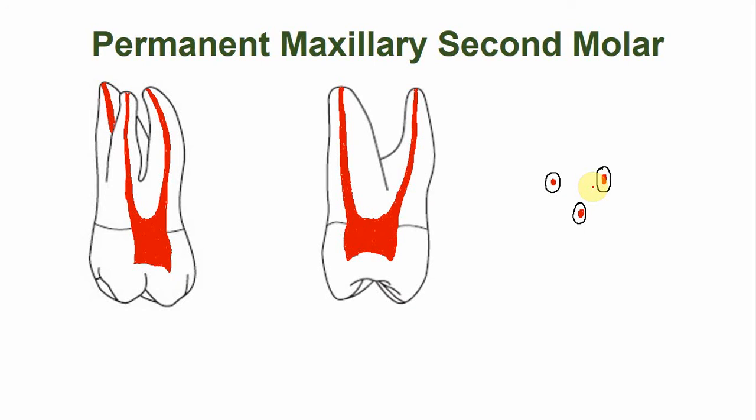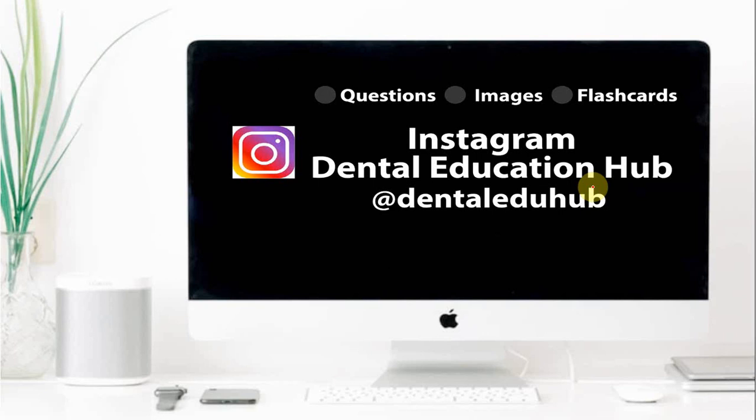However, it is not uncommon to find a second MB2 canal in the permanent maxillary second molar, similar to the MB2 canal of the maxillary first molar. I hope this lecture is useful for you.